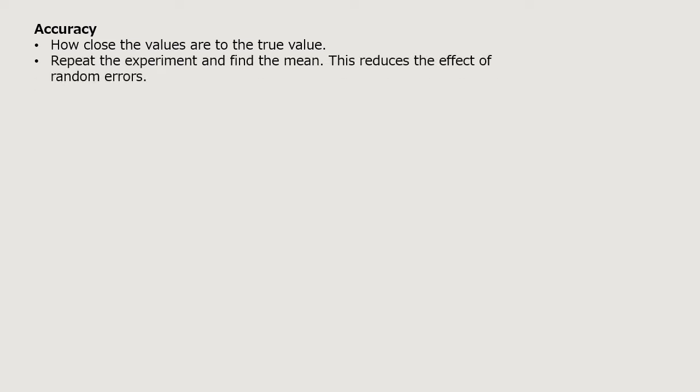Let's start with a very common word. Most of you would already be knowing what this is about. So it is accuracy. Say you had to do an experiment to find the value of acceleration due to gravity, and the value is 9.81. Say you did the experiment and you got the value of 9.79. So that is very close to 9.8, isn't it? So your answer is accurate. The accuracy is how close the values are to the true value. Generally, they don't ask you to define accuracy. They will give you an experiment and they will ask you, how will you make sure that your experiment is accurate? So you should be saying that I will repeat the experiment and then find the mean. Now, why do we find the mean? This reduces the effect of random errors.